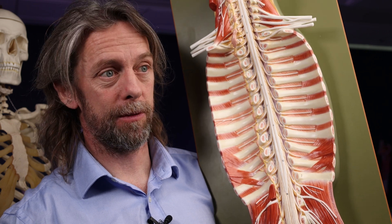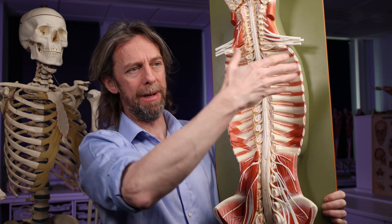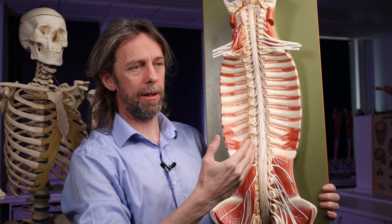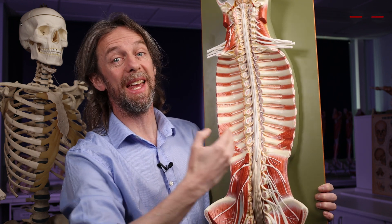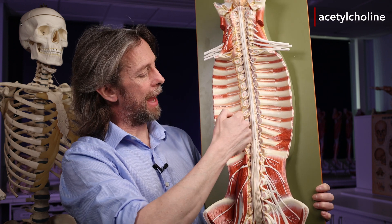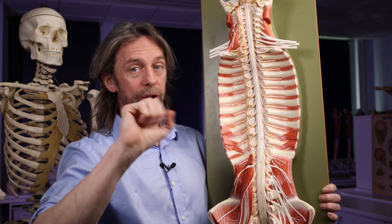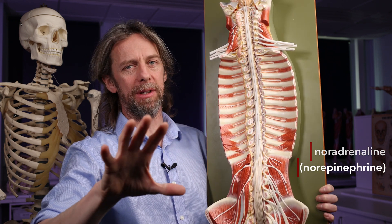The concept is: pre-ganglionic neuron synapses with the post-ganglionic neuron in the ganglion. The neurotransmitter between pre-ganglionic and post-ganglionic sympathetic neurons is acetylcholine. The post-ganglionic sympathetic neuron then runs to its target structure, and the neurotransmitter used there is noradrenaline - in almost every case.